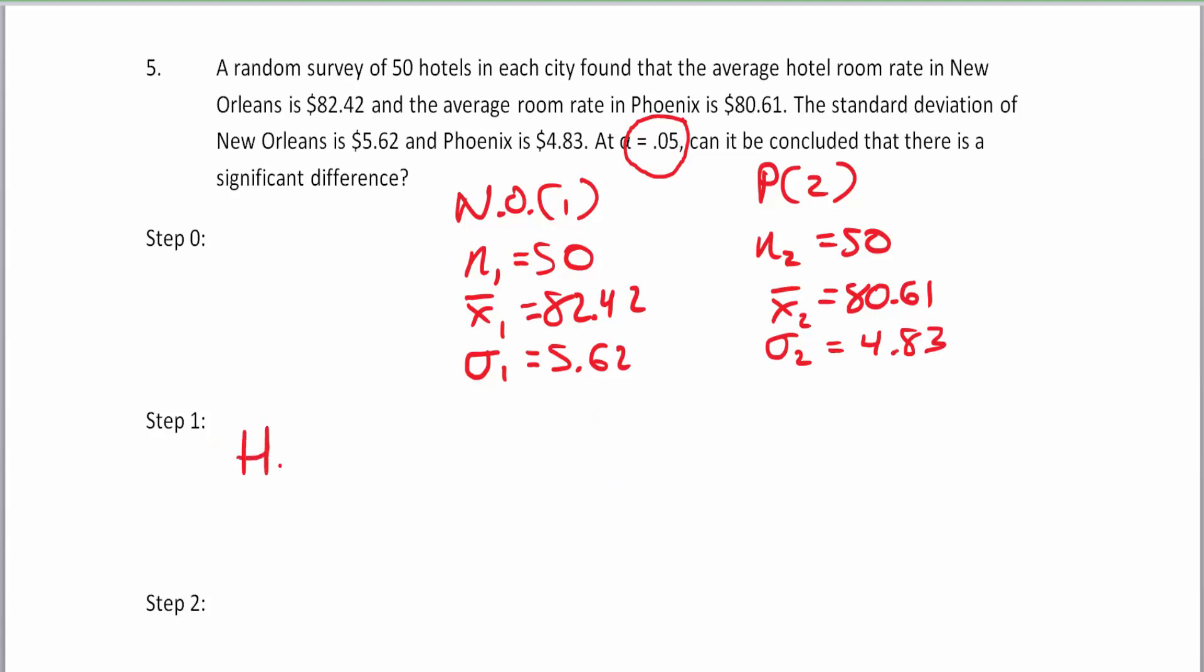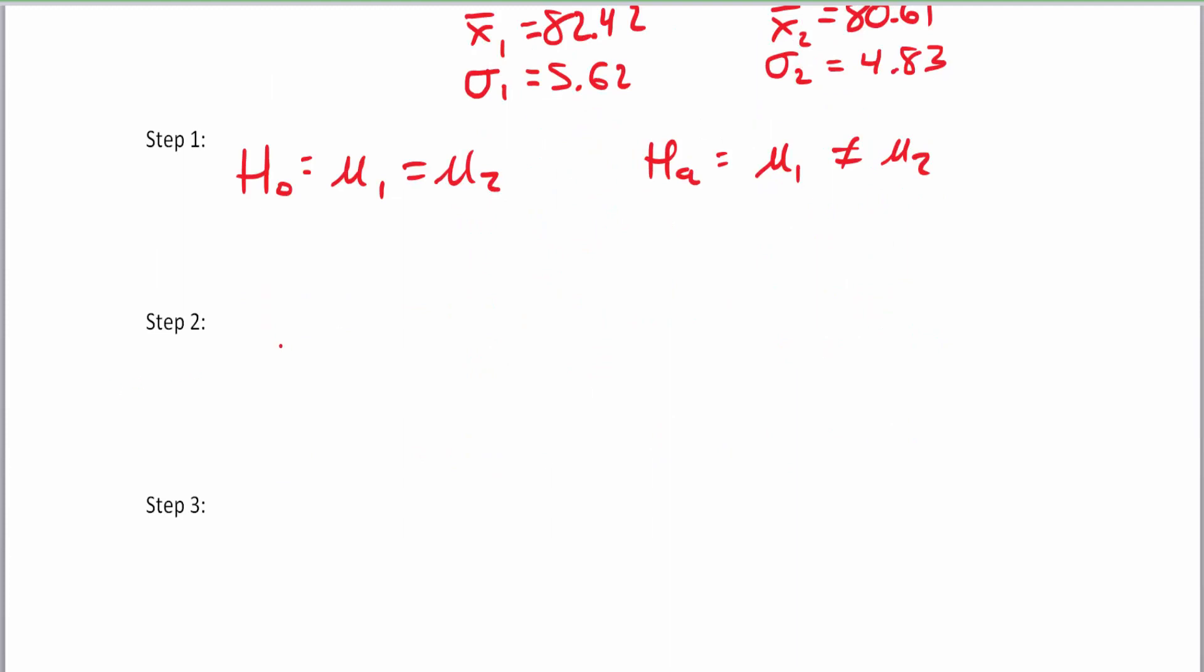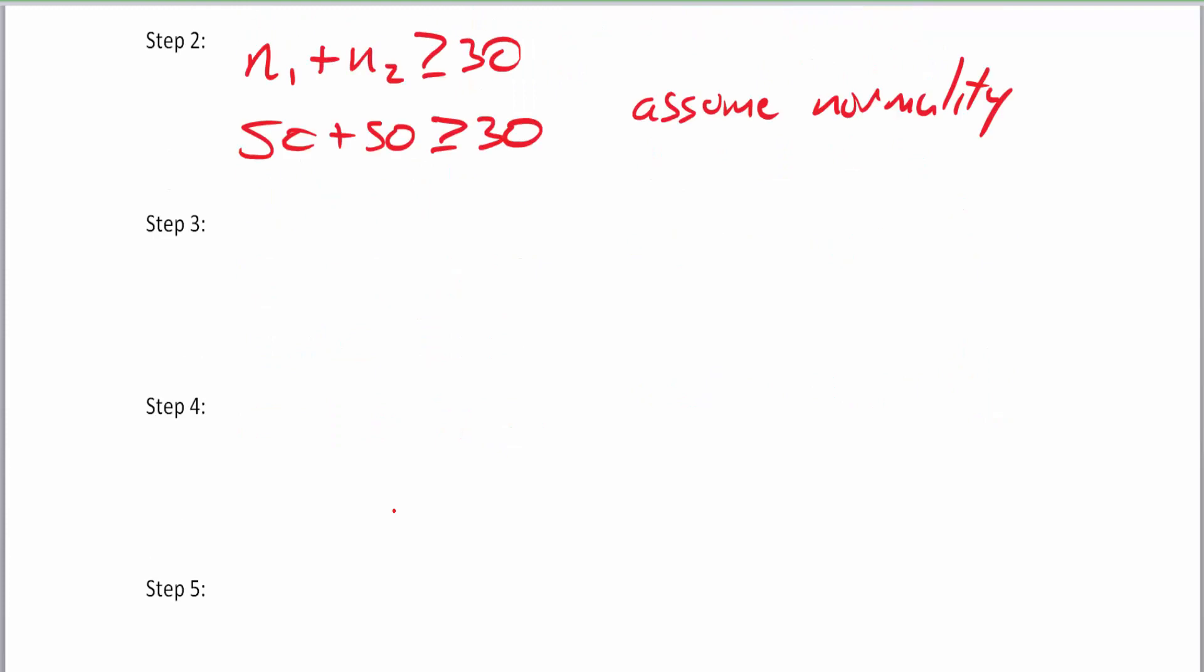But we've got our step zero. So step one is going to be to take our null and an alternative. And it says, can it be concluded that there's a significant difference? So mu sub one is not equal to mu sub two. That's the claim that we're making here. The null is going to be mu sub one is equal to mu sub two. So it doesn't matter which city you go to. The averages are close enough because they're not statistically significantly different. So was our n sample sizes for each of these two groups greater than or equal to 30? Obviously, yes. Because 50 plus 50 is greater than or equal to 30. So we can assume normality. Which also means that we can use our two samples z-test, which we'll do in step three.